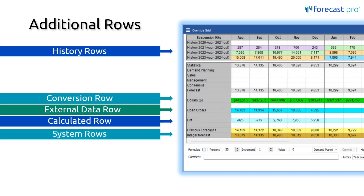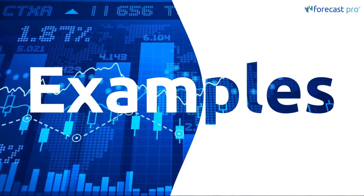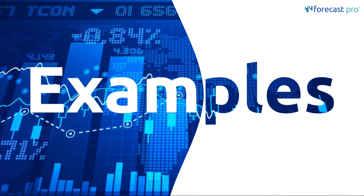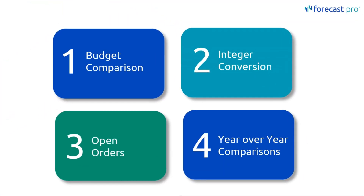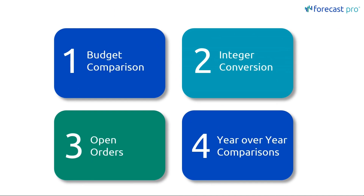The key thing here is that we have lots of different options when it comes to these additional rows, and we want to load in any kind of additional information that will help us when making our overrides directly. Now let's look at some examples within Forecast Pro. We're going to look at four distinct examples: first, a budget comparison; second, an integer conversion; third, an example showing open orders; and finally, a year-over-year comparison.